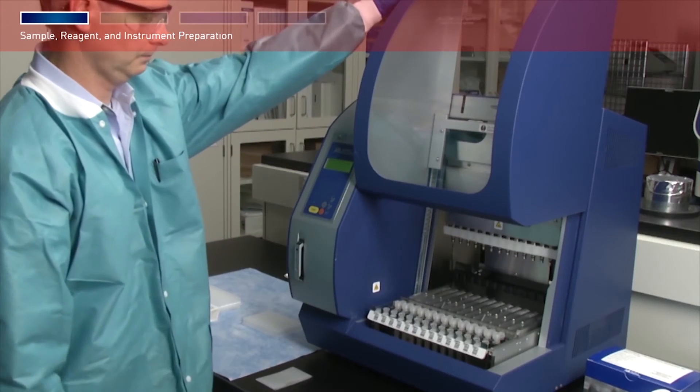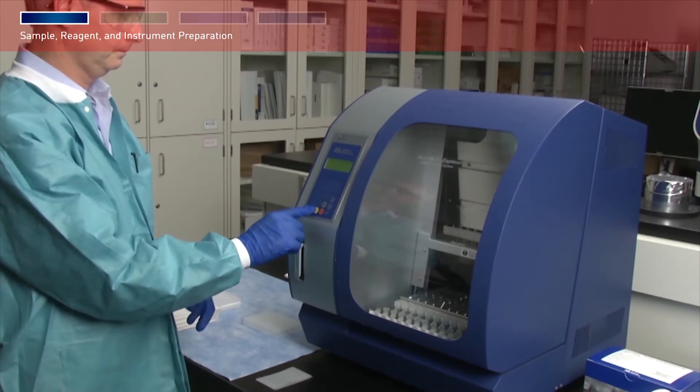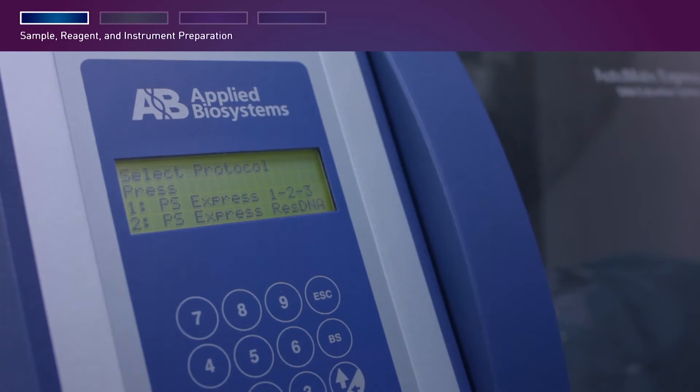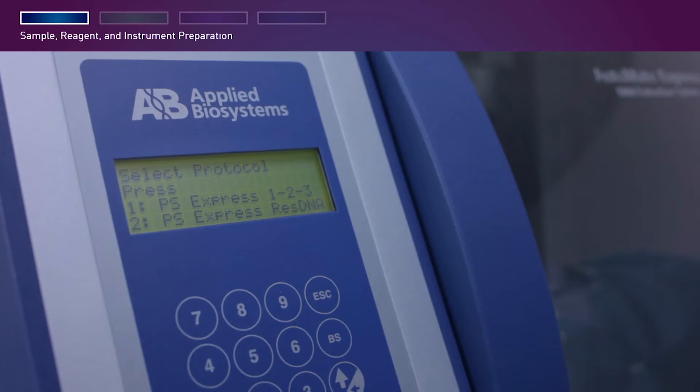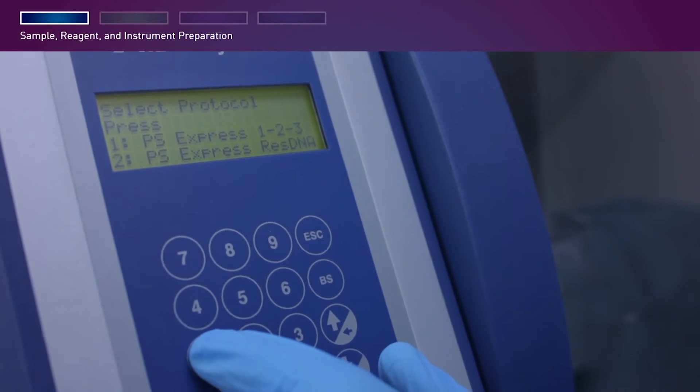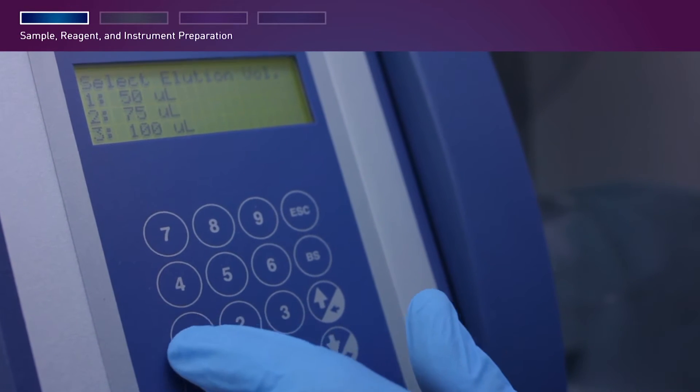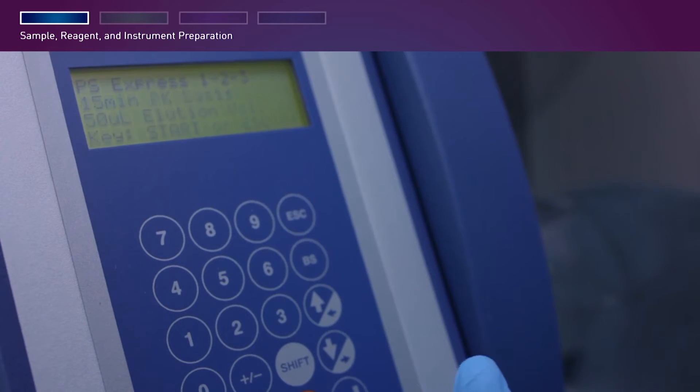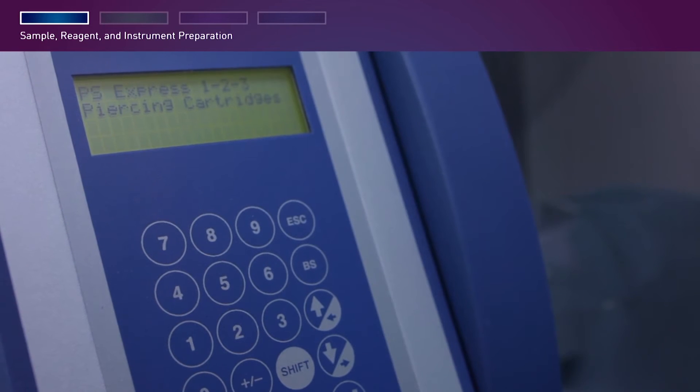Close the instrument door and press Enter. The system will then walk you through the protocol setup. Press 1 to select the PrepSeek 123 option for Mycoplasma, MMV, or Vesivirus. Press 2 to select the PrepSeek option for residual DNA. Select the elution volume, then review your selections and press Start. The screen shows the steps and the appropriate runtime remaining.